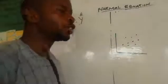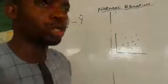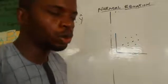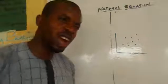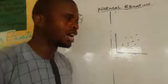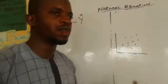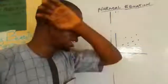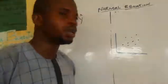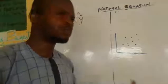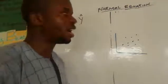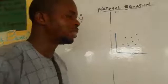In this video we are going to be looking at the normal equation of regression analysis. If you want to derive the normal equation, what you need to do is get the value of the deviation. To get your deviation, you need to look at the observed value and the estimated value.